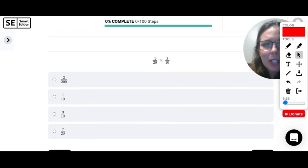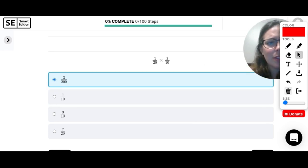Let's multiply 1 twentieth times 3 tenths. So when we multiply fractions, multiply the top. 1 times 3 is 3. Multiply the bottom. 20 times 10 is 200. And there's nothing I can simplify there. So 3 over 200 is our solution.